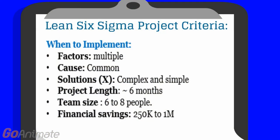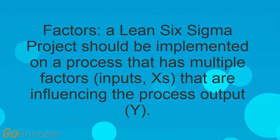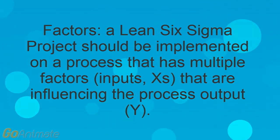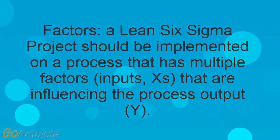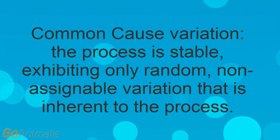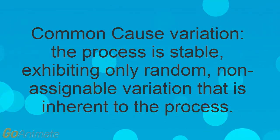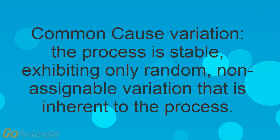Prior to launching a Lean Six Sigma project, ensure the problem fits the following criteria. A Lean Six Sigma project should be implemented on a process that has multiple factors — inputs (Xs) — influencing the process output (Y). Common cause variation means the process is stable, exhibiting only random, non-assignable variation that is inherent to the process.